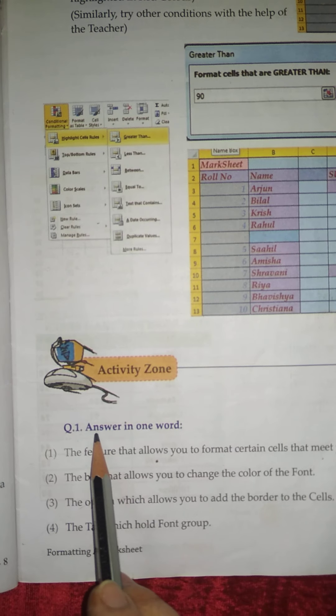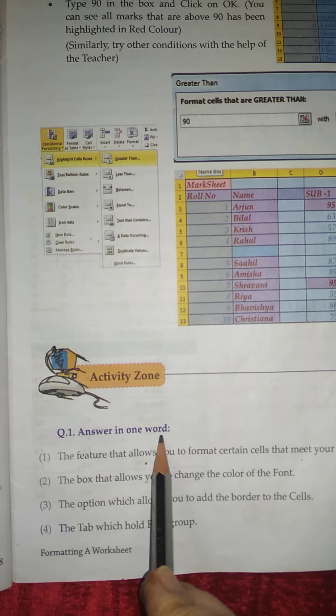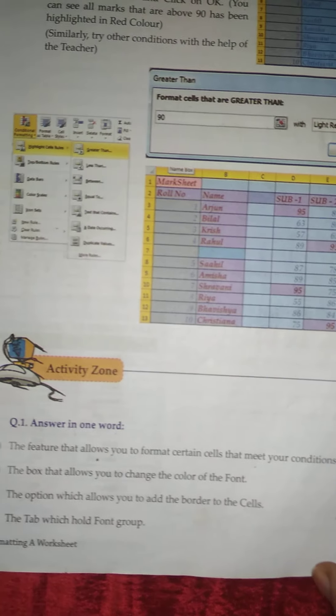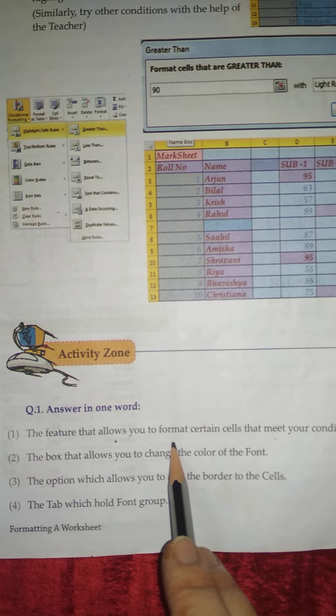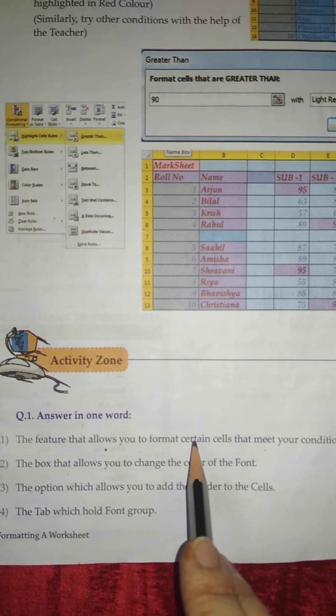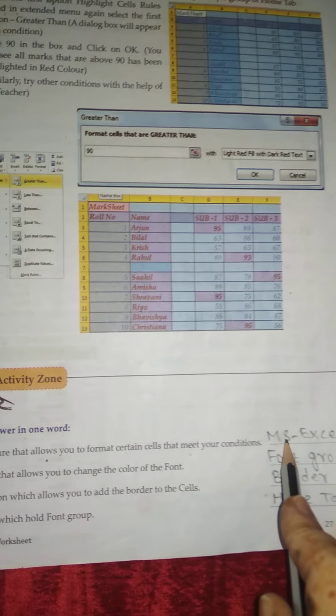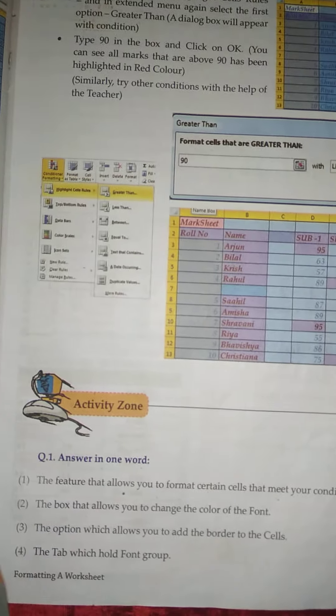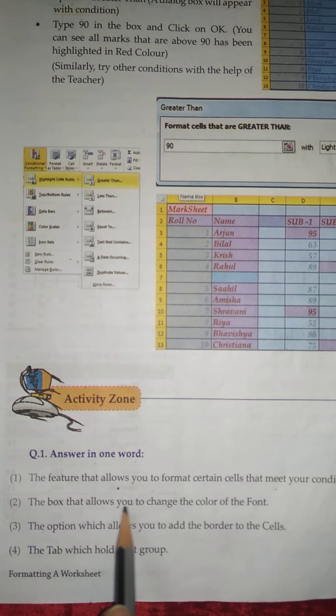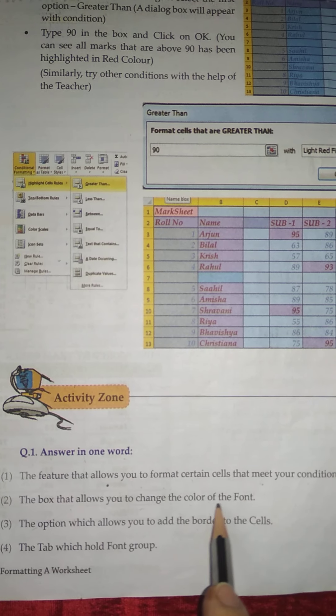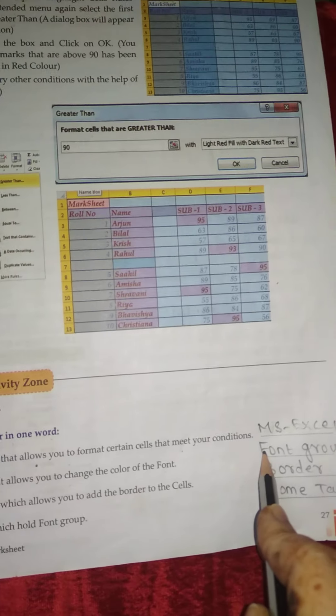Question number one: Answer in one word. Number one: the feature that allows you to format certain cells that meet your conditions - MS Excel. Number two: the box that allows you to change the color of the font - Font Group.